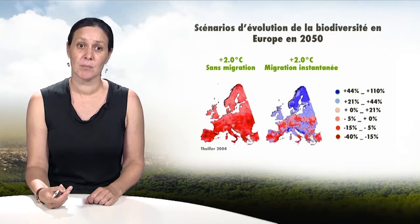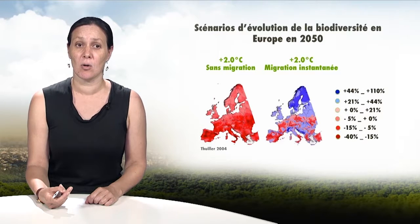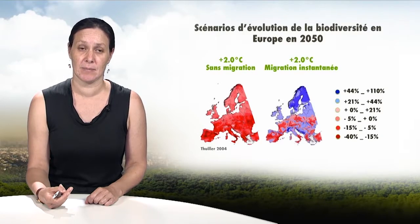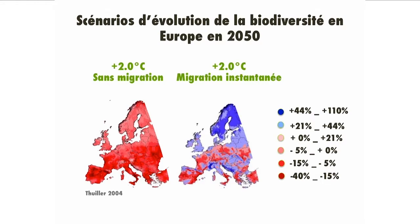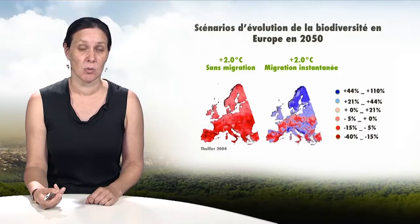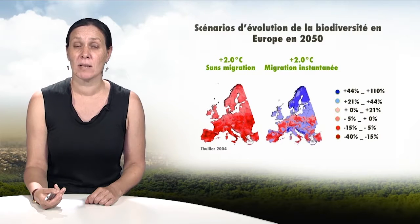Here are two scenarios which describe the evolution of the diversity of species in Europe between now and 2050, compared to the reference in 1990. They are both based on a single scenario of climate change with two different hypotheses. The first scenario supposes that species do not have the ability to migrate quickly enough and will therefore become extinct in zones where the climate is unfavorable, without moving to other zones where the climate would be favorable. The second scenario supposes that the migratory capacity of the species is sufficient for them to instantly colonize all of the areas that become favorable to them between now and 2050. Both are extreme scenarios and their realism can be challenged.